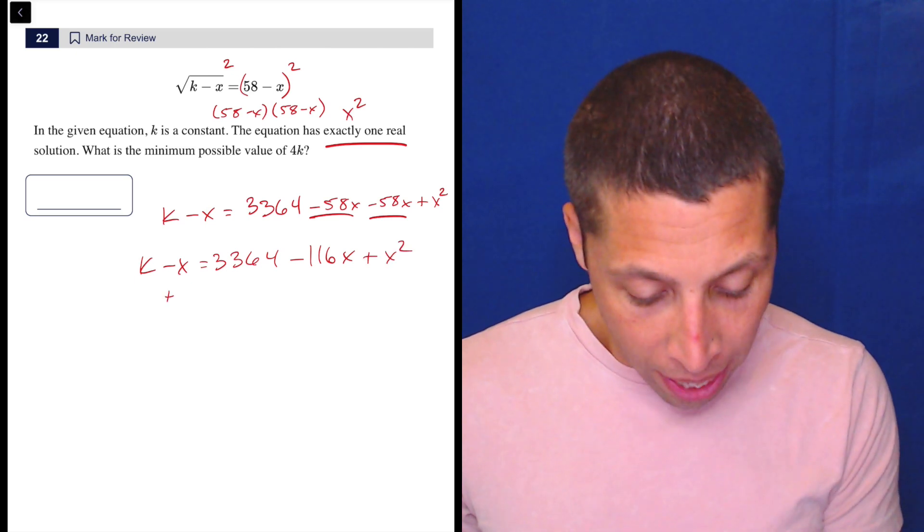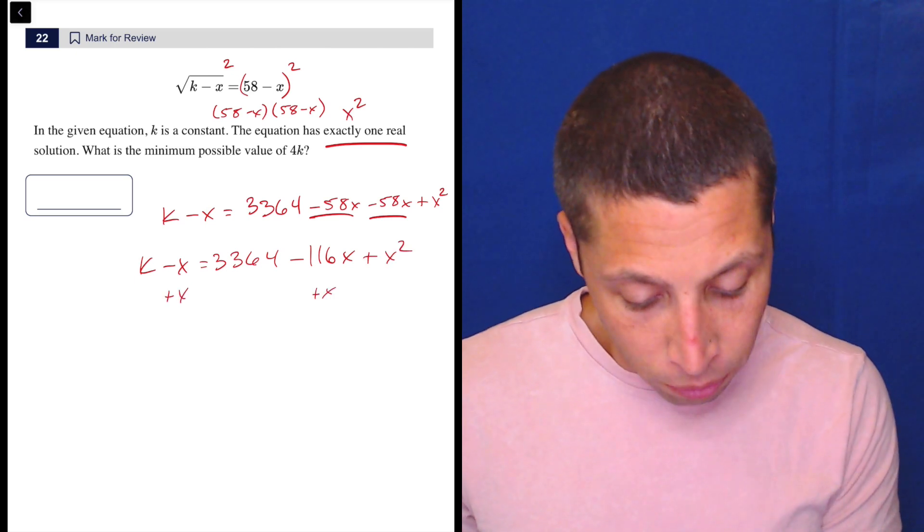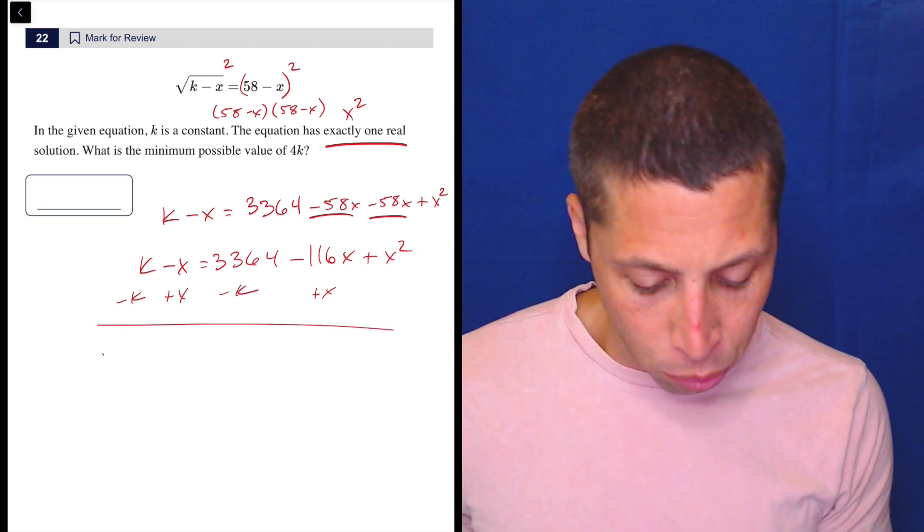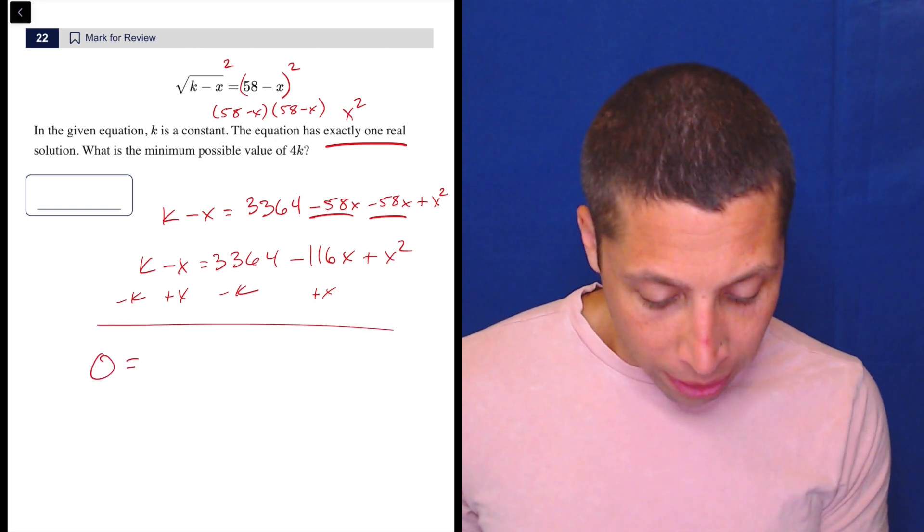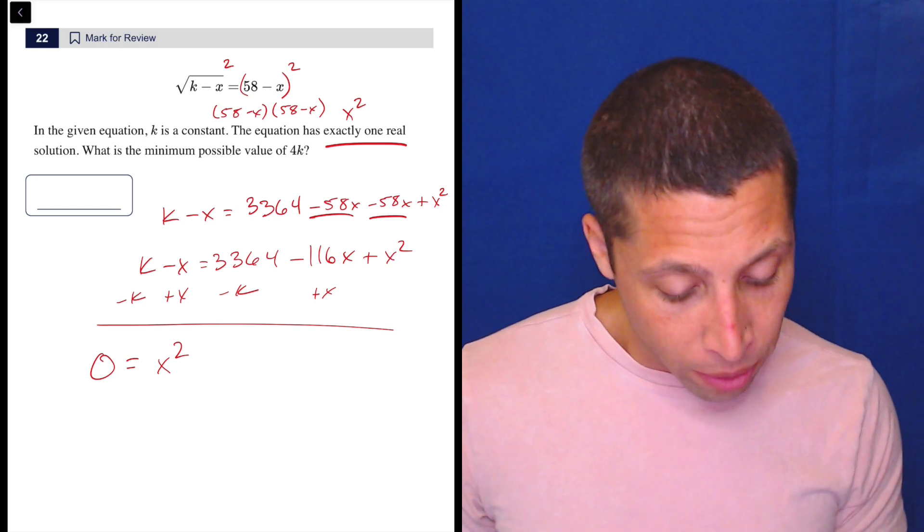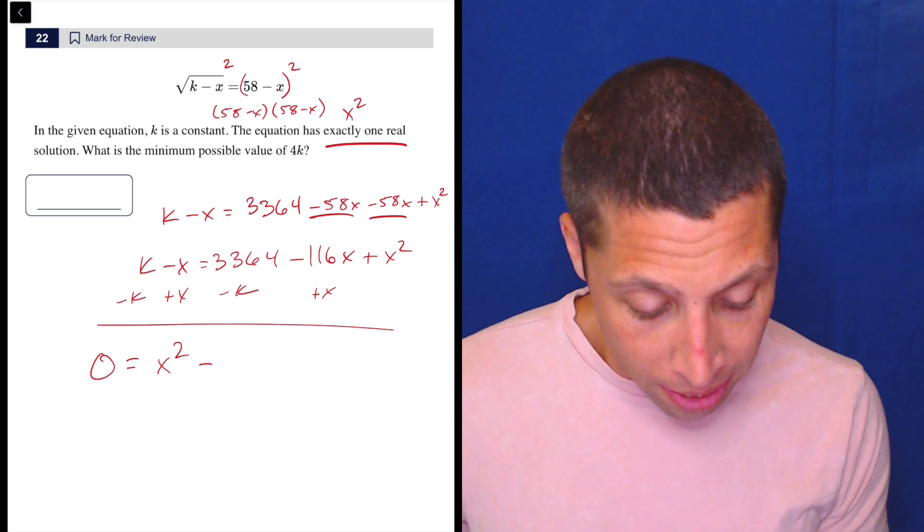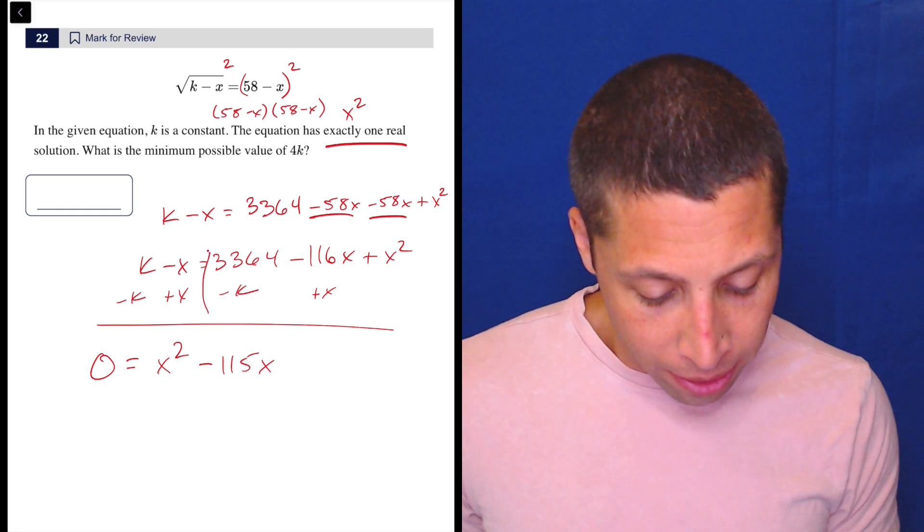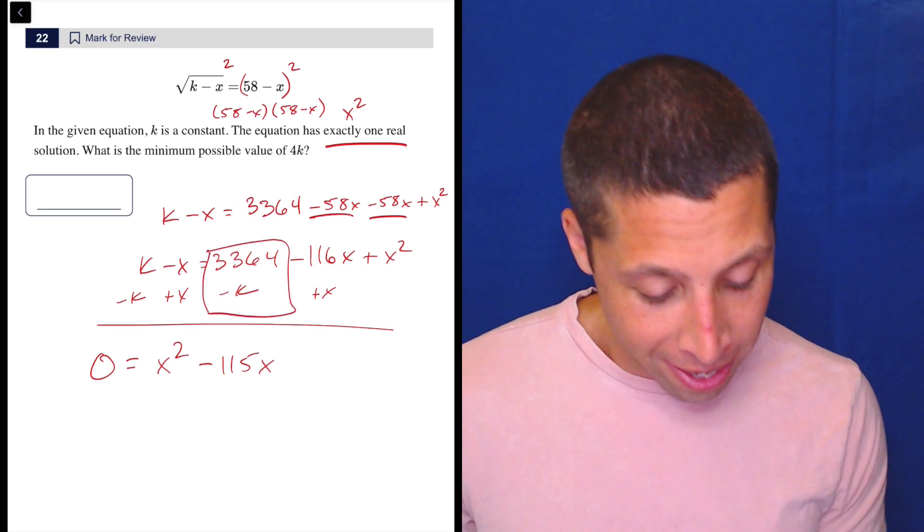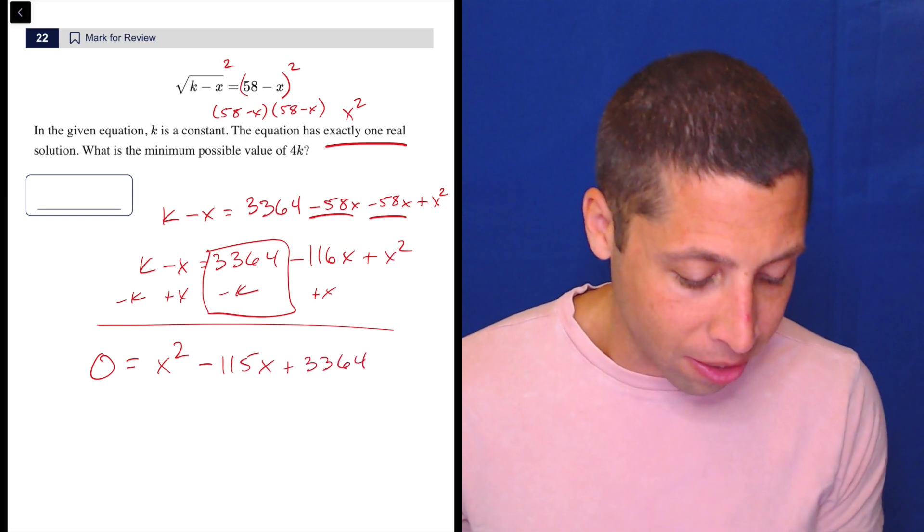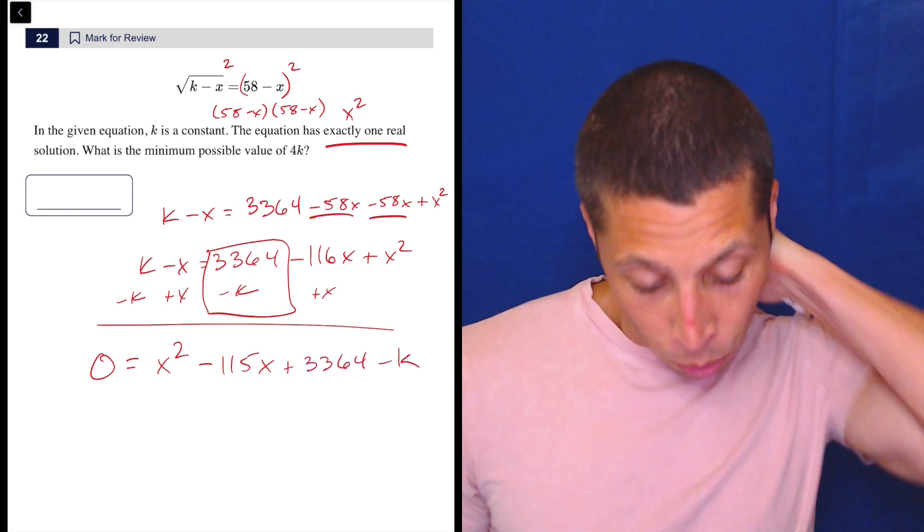And now, I'm going to add this over and subtract this. And so, some annoying things happen. First, we have 0. I'm also going to move my x squared to the front because that's kind of how I want to write a quadratic is the x squared first. So, negative 116 plus x is negative 115x. And then here, it's annoying, but we can't combine those, right? They're two different things. So, 3364 minus k. We're going to leave it as k.